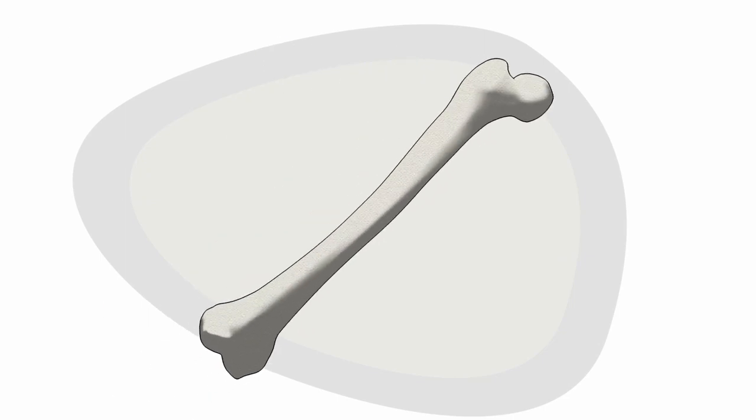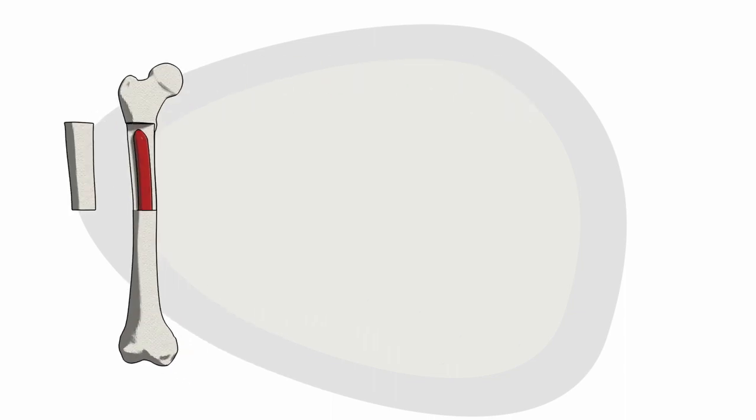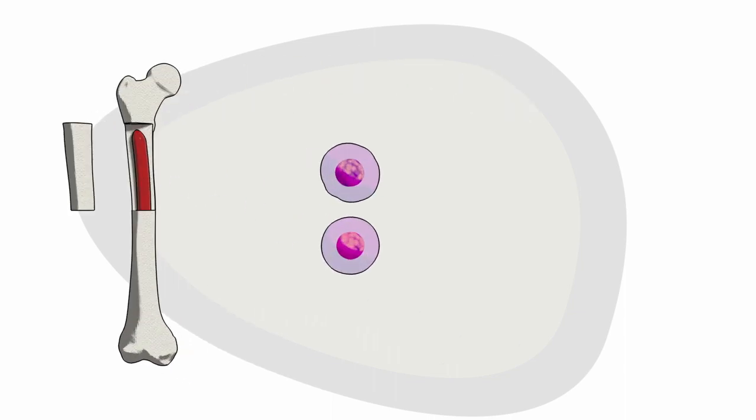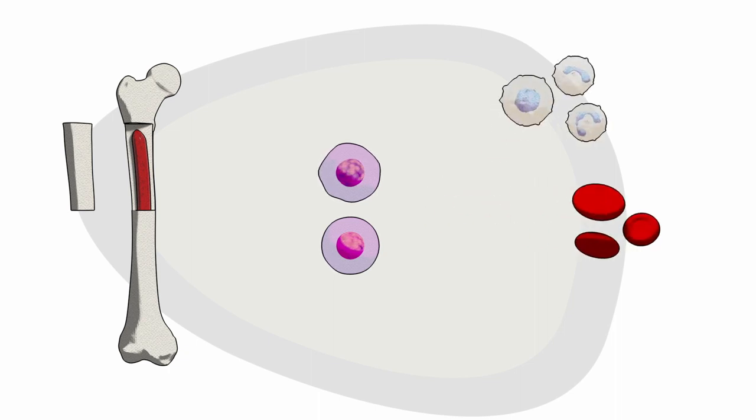CLL is a type of blood cancer that starts in the bone marrow. Bone marrow is the soft inner part of the bone, where stem cells and three main types of blood cells are formed: white blood cells, red blood cells, and platelets.